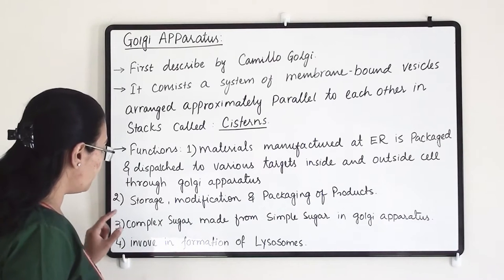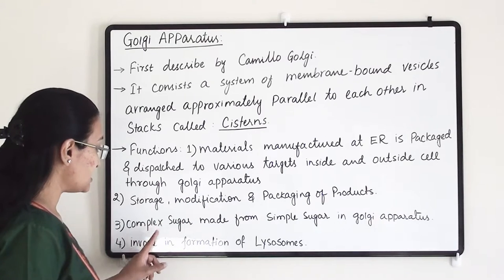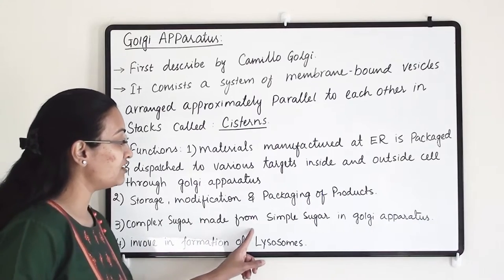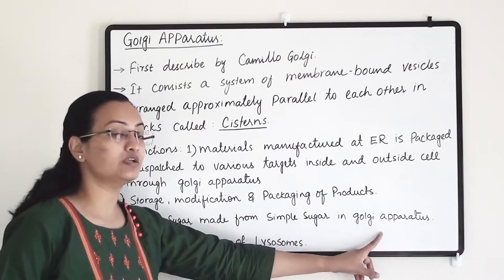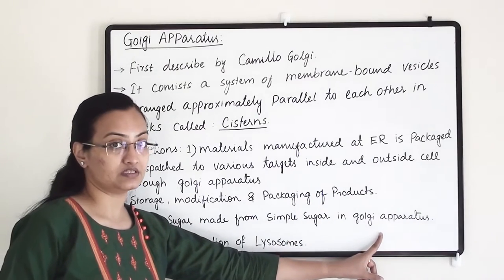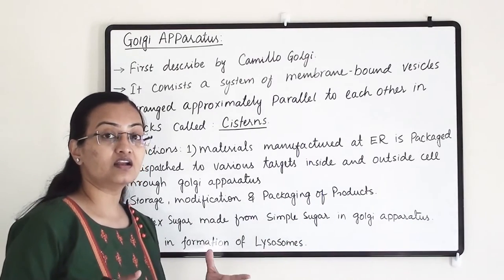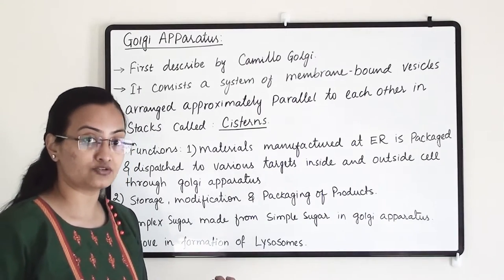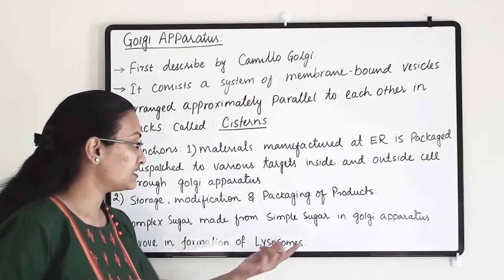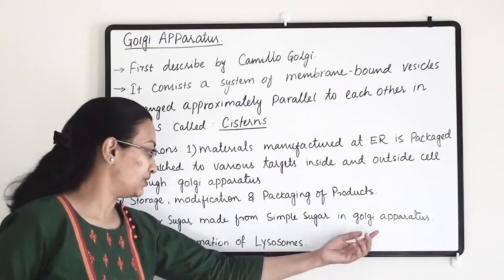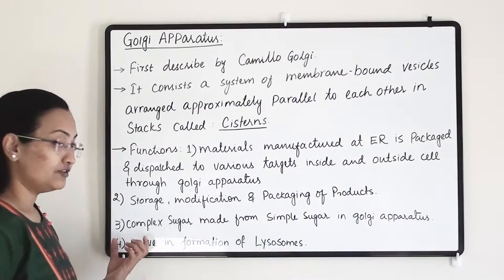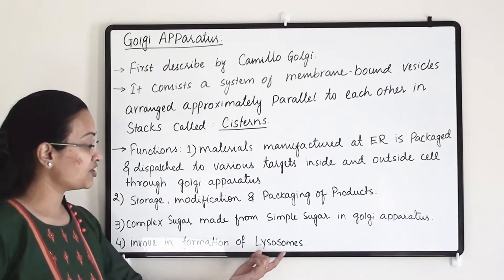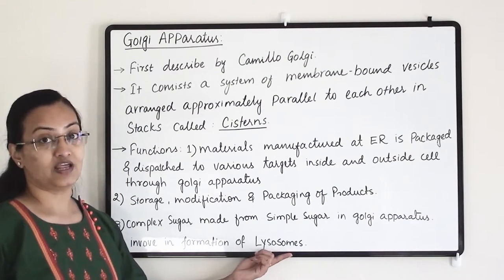The third function is that complex sugars are also made from simple sugars in the Golgi apparatus — it converts simple sugars into complex sugars. The fourth function is that the Golgi apparatus is involved in the formation of lysosomes.